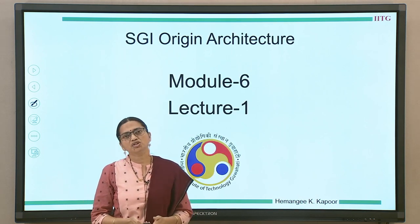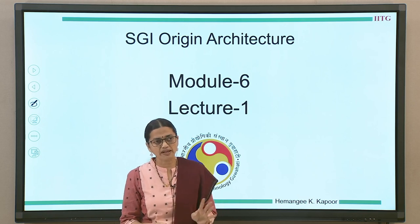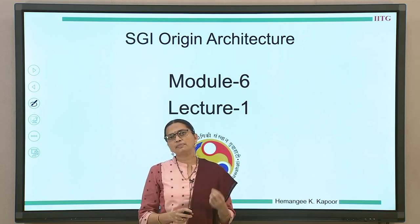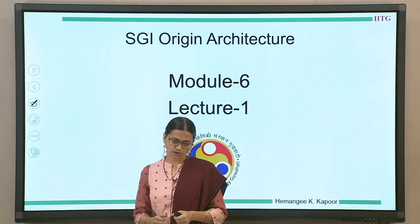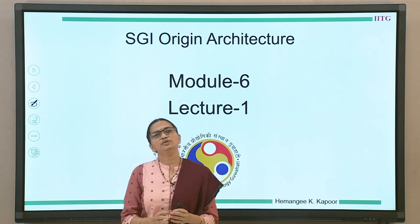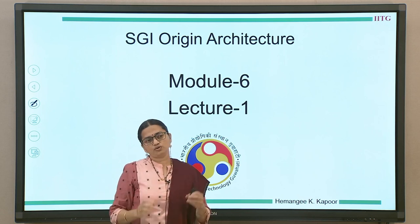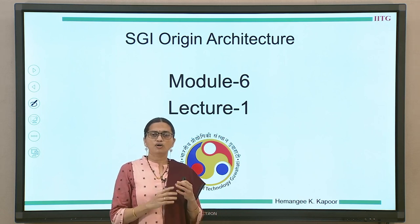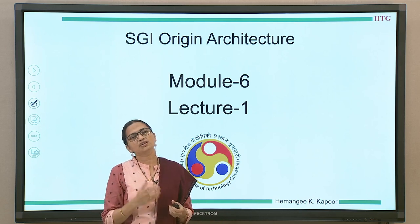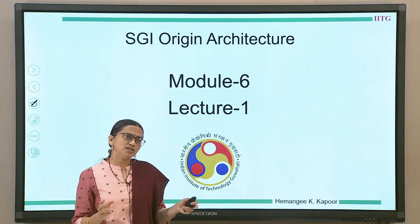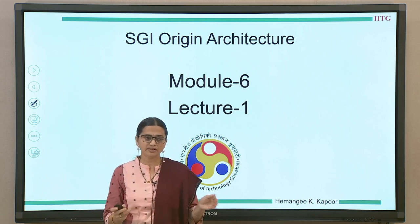We will start with the first lecture covering the SGI Origin architecture. This is a directory protocol, so there is no snooping among the processors. Even if there is a bus available, processors are not going to snoop on it because there will be no transmission of snoop messages onto the bus. There is a separate directory controller handling one-to-one messages to the cache coherence controller. Every node has a coherence controller or cache controller handling messages from the directory controller.